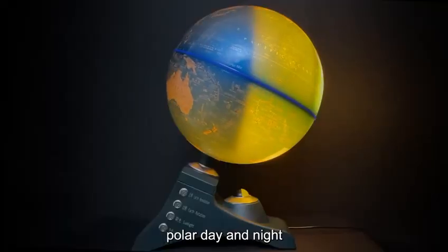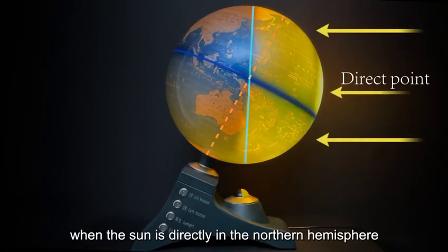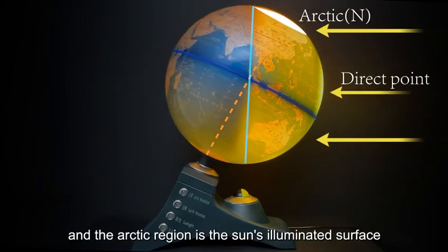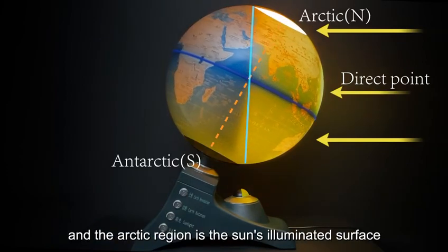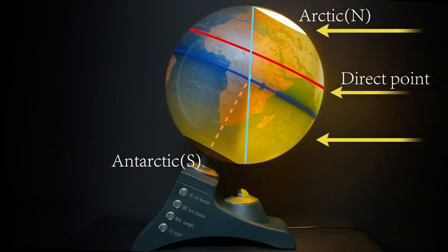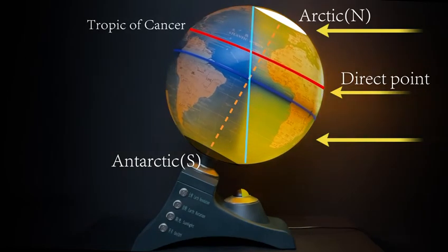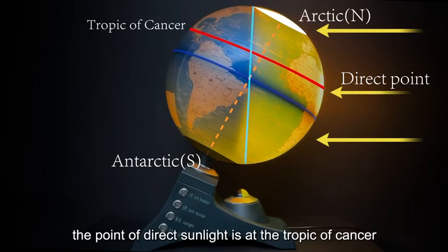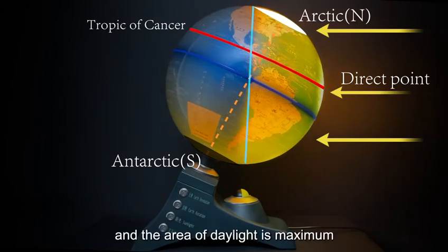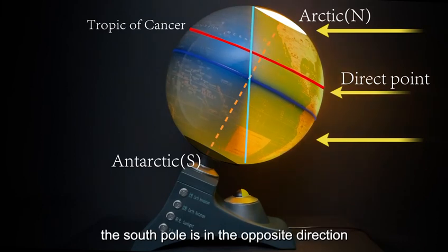Polar Day and Night: When the Sun is directly over the northern hemisphere and the Earth rotates for 24 hours, the Arctic region remains on the Sun's illuminated surface, so the polar day phenomenon occurs. When the Sun is in the direction of the summer solstice, the point of direct sunlight is at the Tropic of Cancer and the area of daylight is at its maximum, while the South Pole experiences the opposite phenomenon.